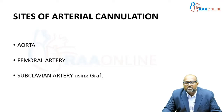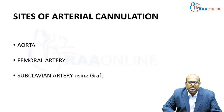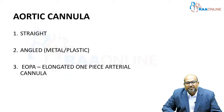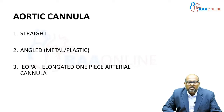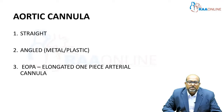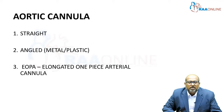The most common sites of aortic cannulation are the aorta, femoral artery, and the subclavian artery using a graft. The axillary artery is also used in some cases where the ascending aorta cannot be cannulated. Aortic cannulas are of three different types: the straight aortic cannula, the angled cannula with metal and plastic tips, and the elongated one-piece arterial cannula. This newer cannula ensures less pressure drop, and even using a small cannula, high flows can be delivered to the patient.